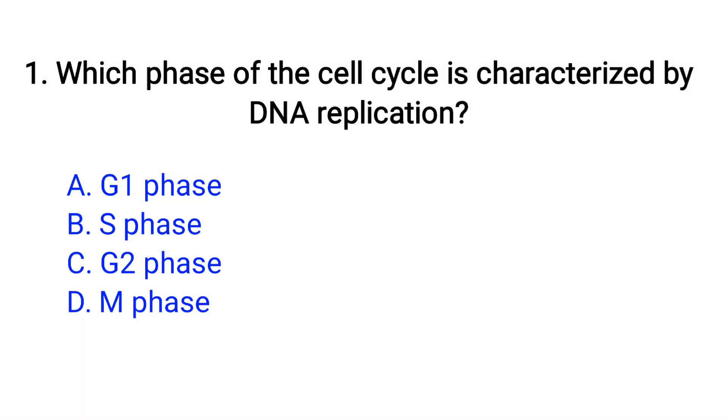Question number 1. Which phase of the cell cycle is characterized by DNA replication? Option A: G1 phase, B: S phase, C: G2 phase, D: M phase. The right answer is option B, S phase.